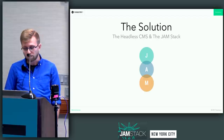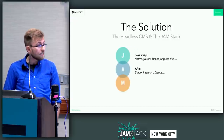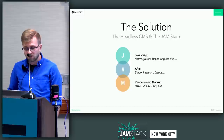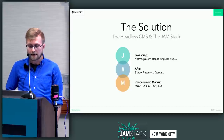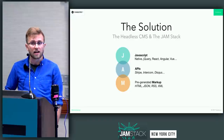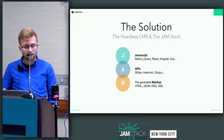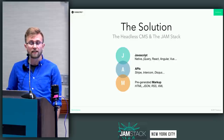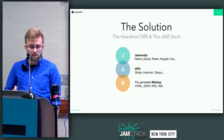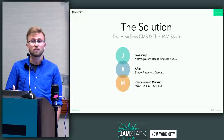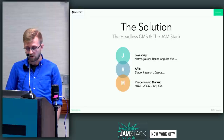The Jamstack — JavaScript, APIs, and pre-generated markup — is this awesome new approach to building websites that is a lot faster, a lot more scalable, and just a lot more fun to build. The whole premise is you pre-generate markup with build tools, then decorate that markup with JavaScript consuming APIs like Stripe, Intercom, Disqus, or any self-created internal API. You deploy to a CDN, serve really fast, and give users the best possible experience.